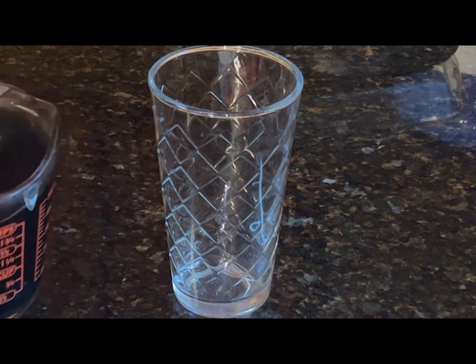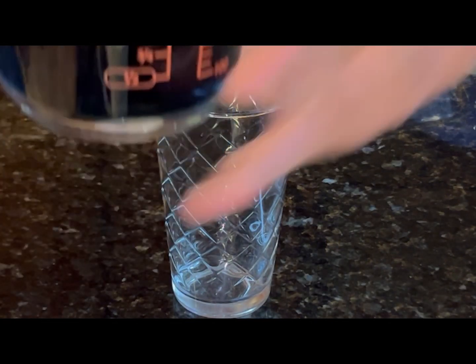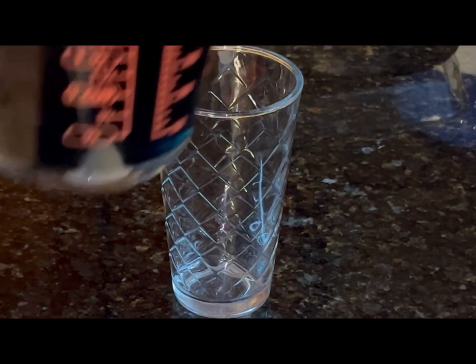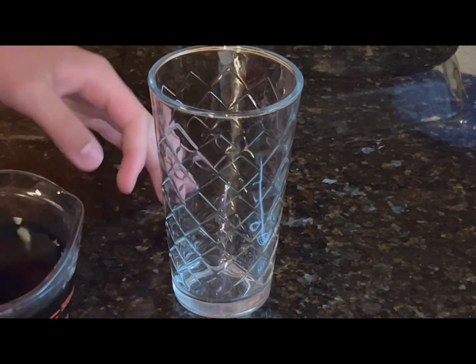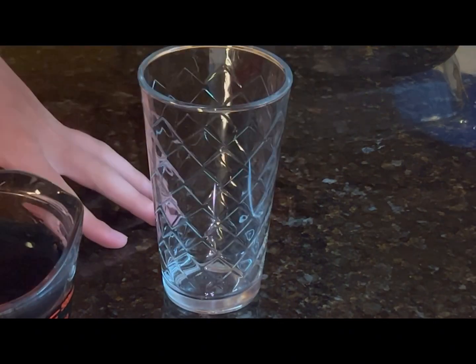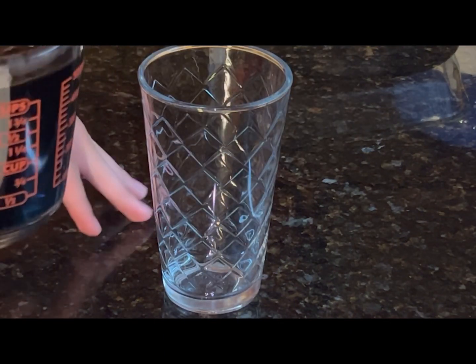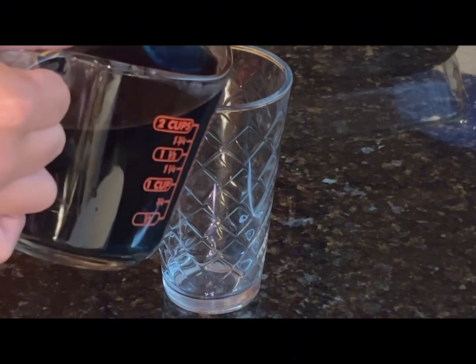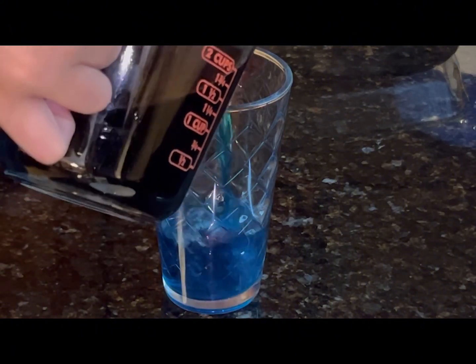All right, this is a tutorial on how to pour water. First, you need something to pour your water out of and something to pour your water into. For this example, I will be using a cup and a measuring cup. So then very carefully you lift up your measuring cup and pour your water into your cup.